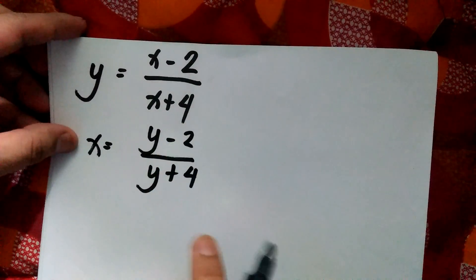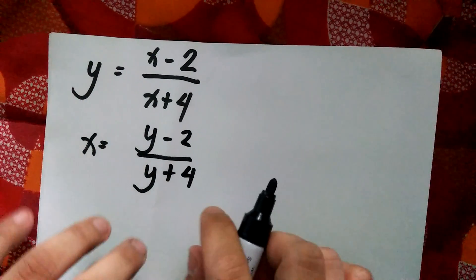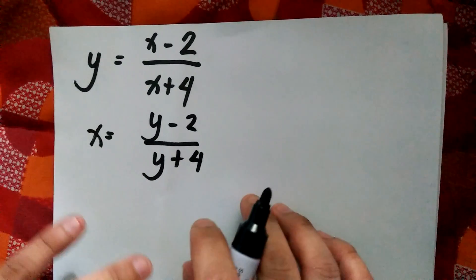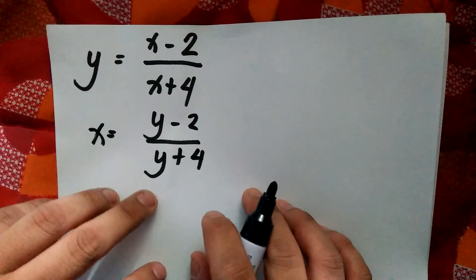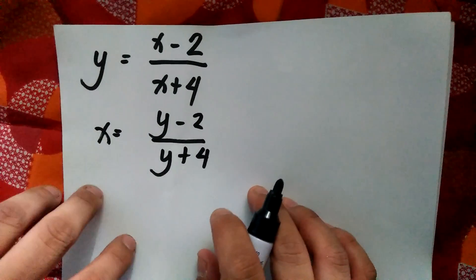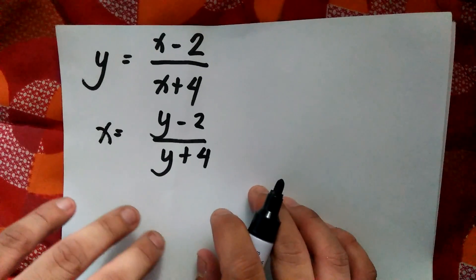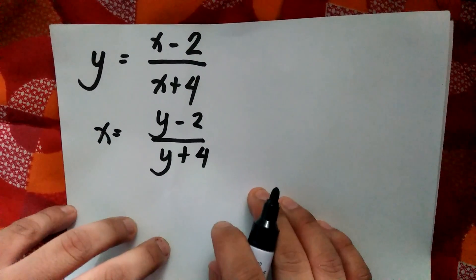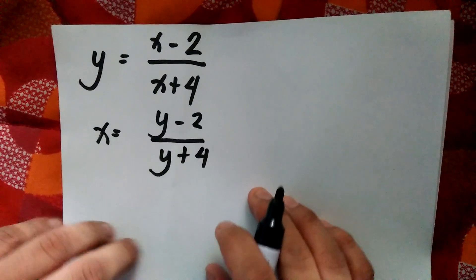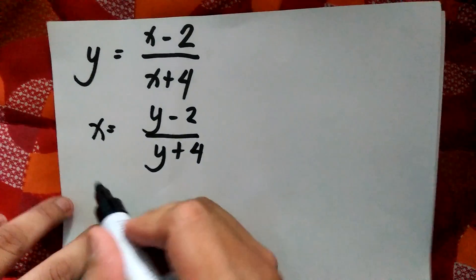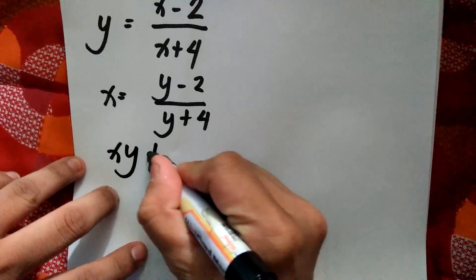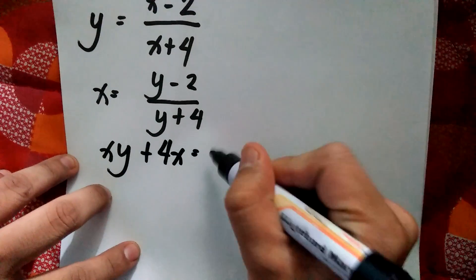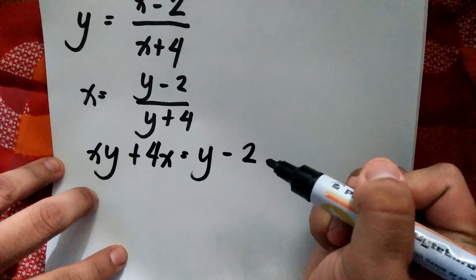After that step, we need to solve for y in terms of x. What we will do is cross multiply the y plus 4 to the x, and then we group common terms to solve for the value of y in terms of x. We have xy plus 4x equals y minus 2.